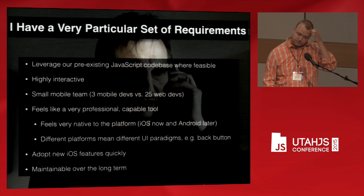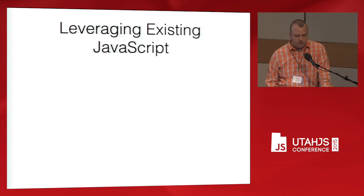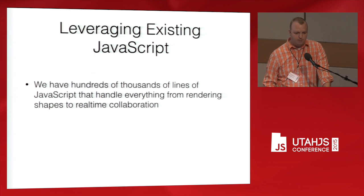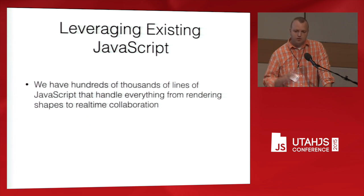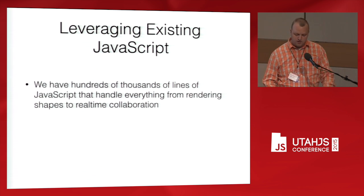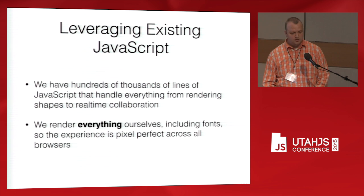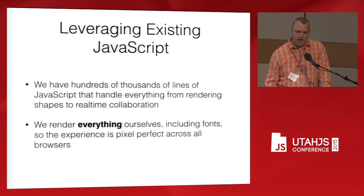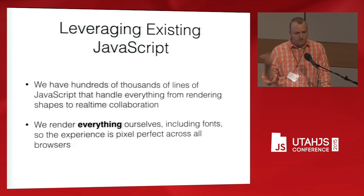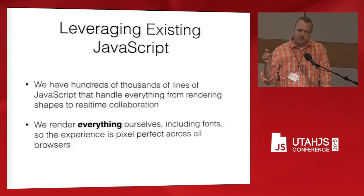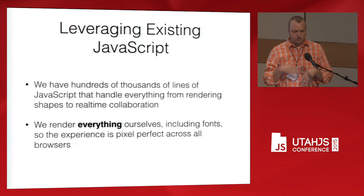We wanted it to be maintainable over the long term. To speak to leveraging our existing JavaScript more concretely: we have hundreds of thousands of lines of JavaScript that handle everything in the editing experience — from rendering all shapes on your diagram to real-time collaboration. We want to leverage as much of that as possible without sacrificing user experience. We really do render everything ourselves. When you see text on a shape, we're not using the browser's font rendering. We've actually converted fonts to a JavaScript font format that gets converted into canvas draw calls — arc, line, etc. — and we draw all those fonts ourselves. Text highlighting, bolding, and italic are all reproduced so it's pixel perfect on every browser and across every device.